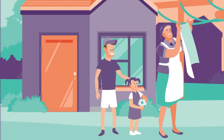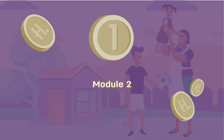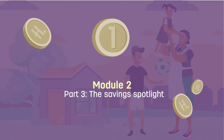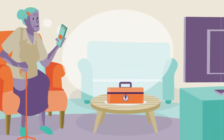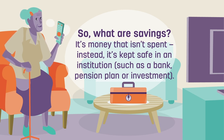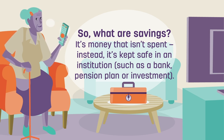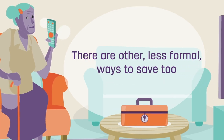We've had a look at banking, then we talked about lending — now it's time to put a spotlight on savings, and why this is so important for financial stability. To kick off, let's understand what savings are. In a nutshell, it's the money you don't spend every month but rather keep it safe. This can be done in a bank account, pension plan, or investment. Usually, this money will earn interest, helping your money grow with inflation.